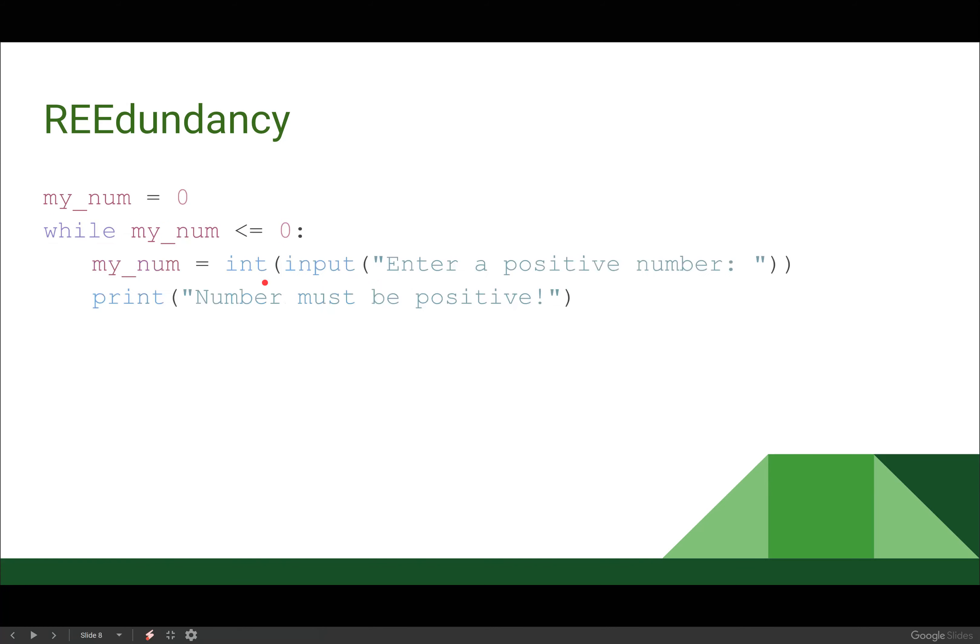What if I swap those two? Is this going to give me what I want? If I say, give me an input and then print number must be positive after. I see people shaking their heads again. Why won't this work? Because if you type in negative one, it's going to print that first before ending it.